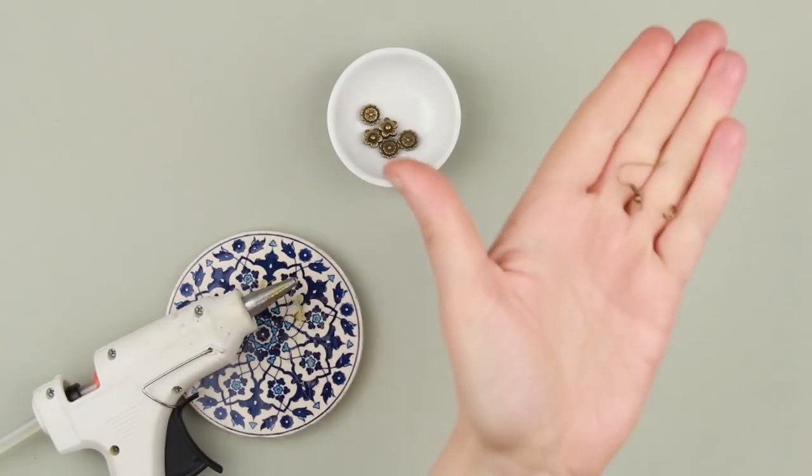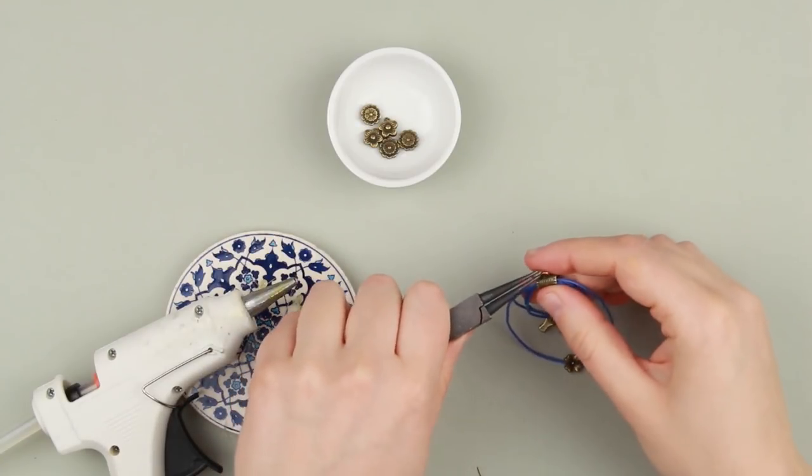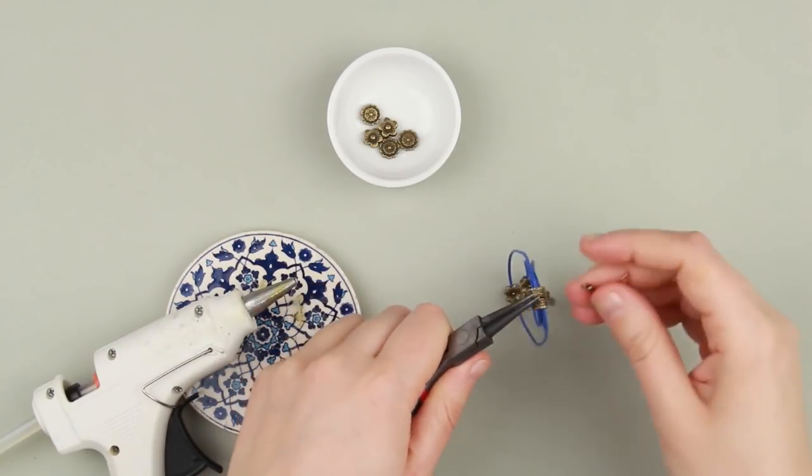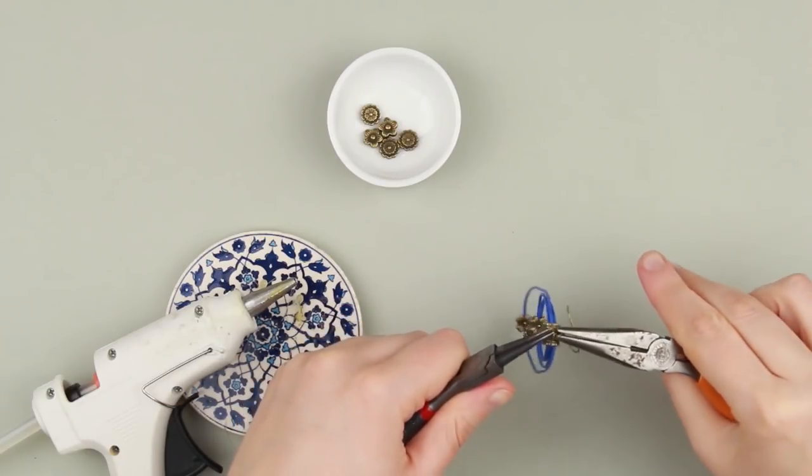You only need to set the French hook. Open a jump ring and pass it through the loop on the connector. Put on the hook. Close the ring.